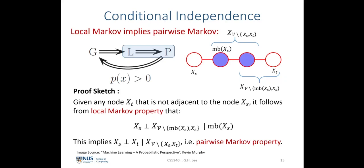It is also straightforward to show the sketch of proof that the local Markov property implies the pairwise Markov property. Given any node xT not adjacent to node xS, as illustrated in this graphical model, xS is not directly linked to xT. It follows from the local Markov property that xS is conditionally independent of all other nodes except the Markov blanket of xS and xS itself, conditioned on the Markov blanket of xS.